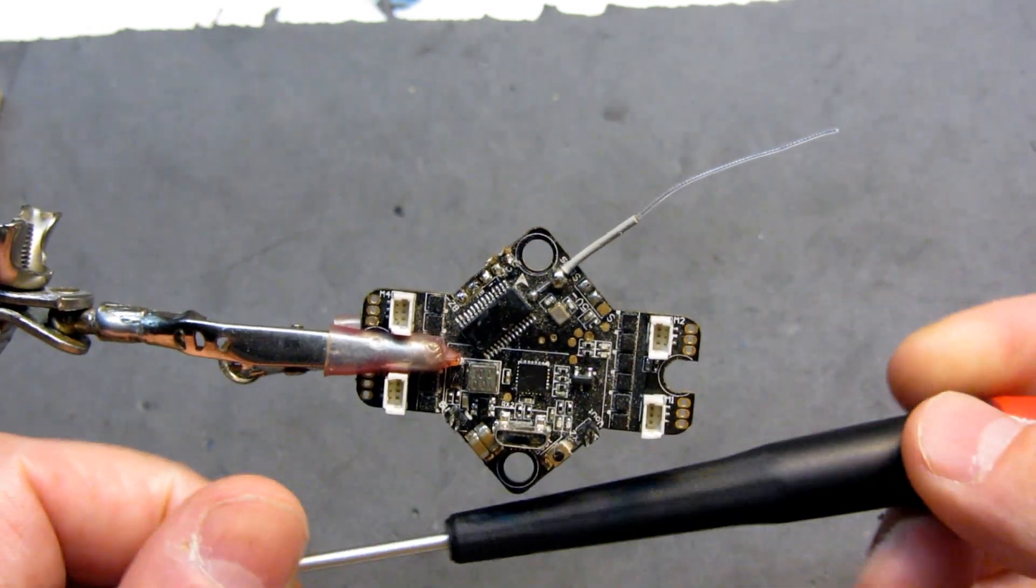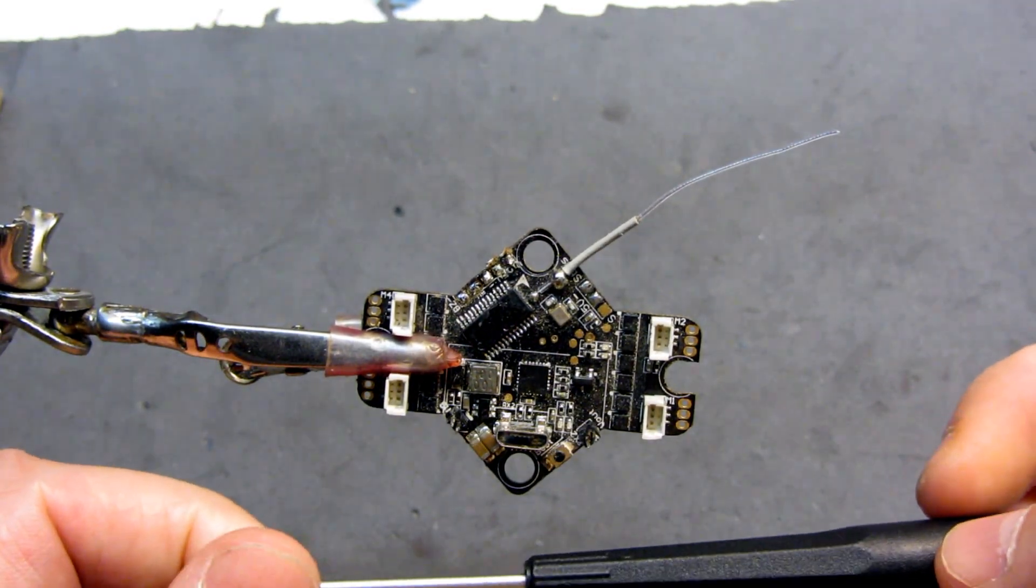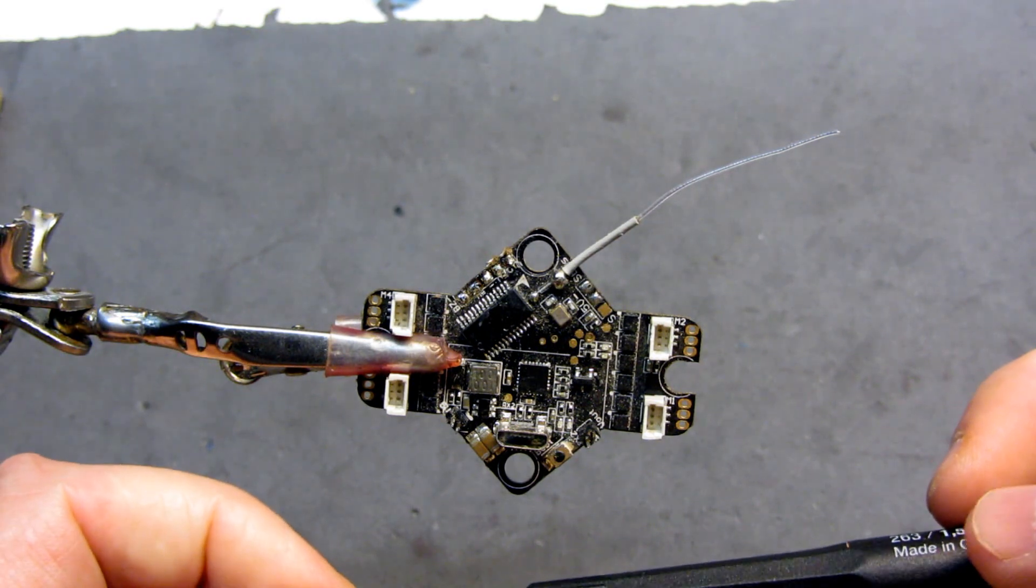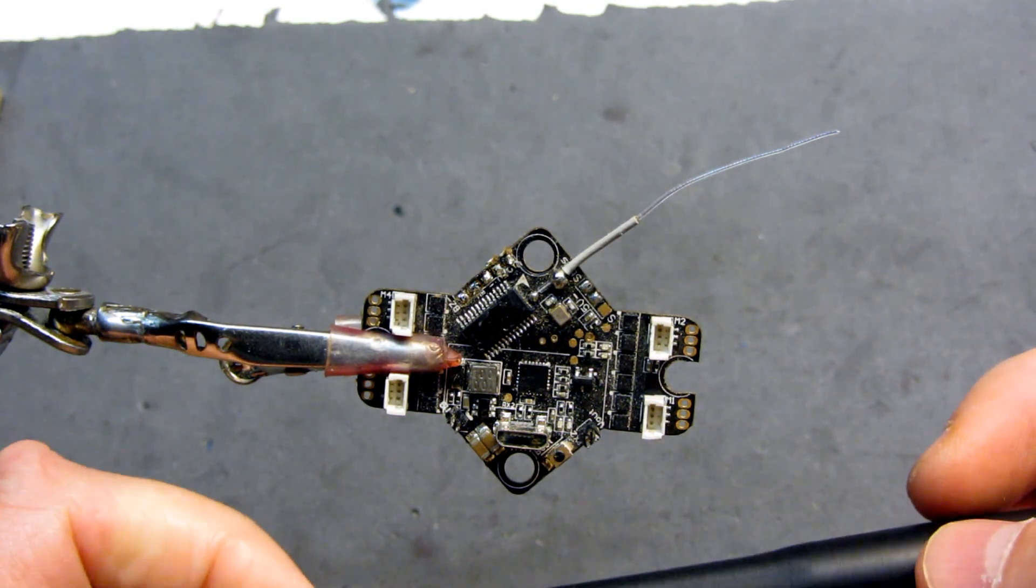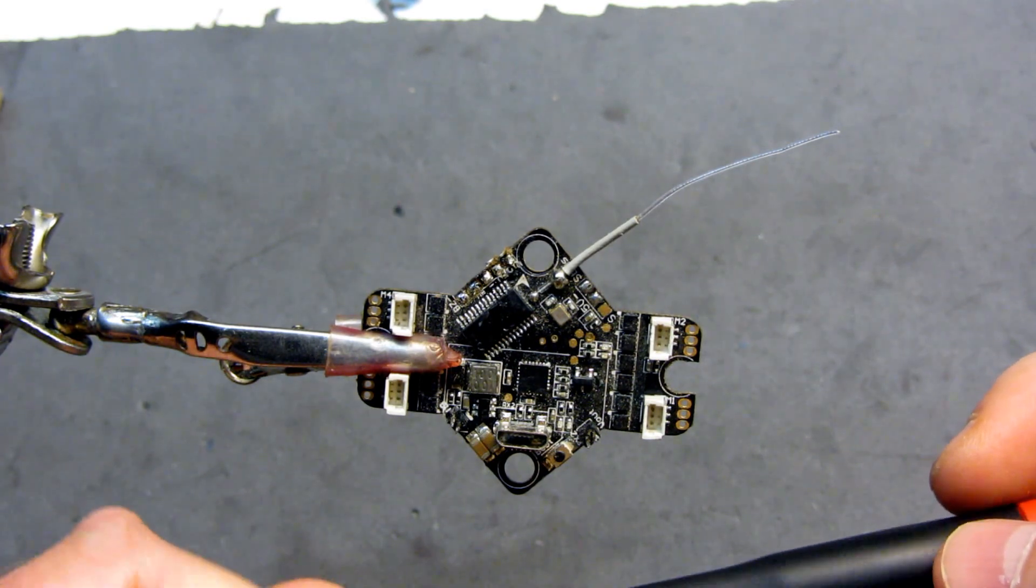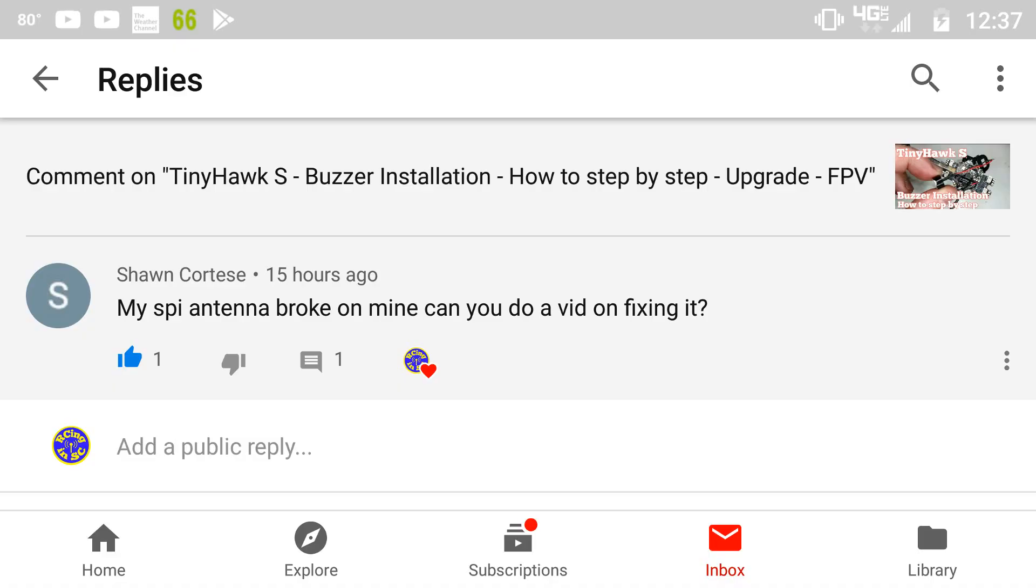Hey what's up guys, RCNNSC here. Today what I got for you is something a little bit different, and that is a viewer request. Sean Cortese wrote in a comment on the video that I did on adding a buzzer to a TinyHawk. He wrote, 'my SPI antenna broke on mine, can you do a vid on fixing it?'